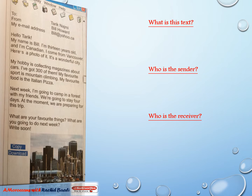Here we have a text. But what is it? Is it a dialogue? Is it a letter? Think about it. Excellent! It's an email — an electronic mail. Now, who is the sender? Who wrote this email? It's Bill Howard.